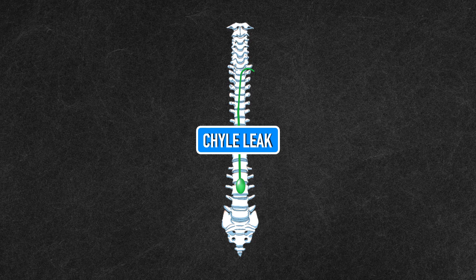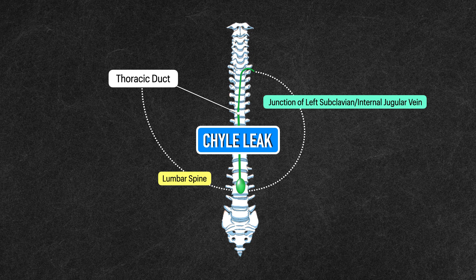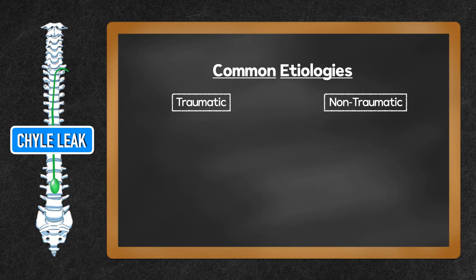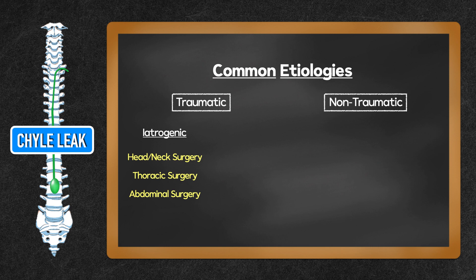A chyle leak occurs when one of the lymphatic vessels carrying it is damaged. This is usually the thoracic duct, which originates at the lumbar spine and empties into the junction of the left subclavian and internal jugular veins, though there are anatomic variations. The common etiologies can be broadly categorized as traumatic and non-traumatic. Under traumatic causes, some are iatrogenic, meaning they happen unintentionally during a medical examination or treatment. This includes head and neck surgery, thoracic surgery, and abdominal surgery.